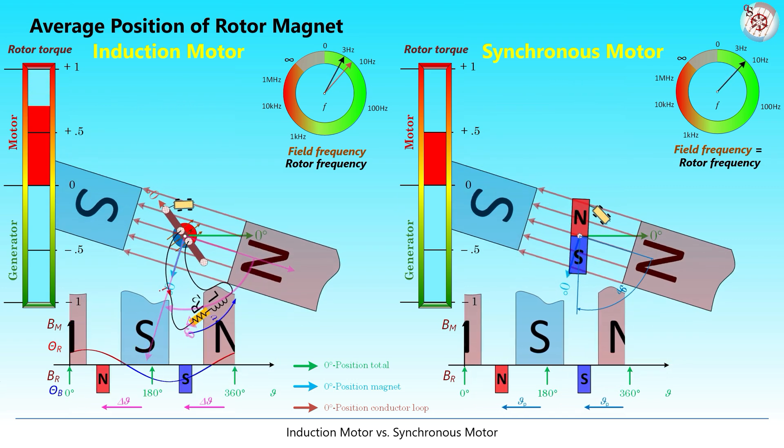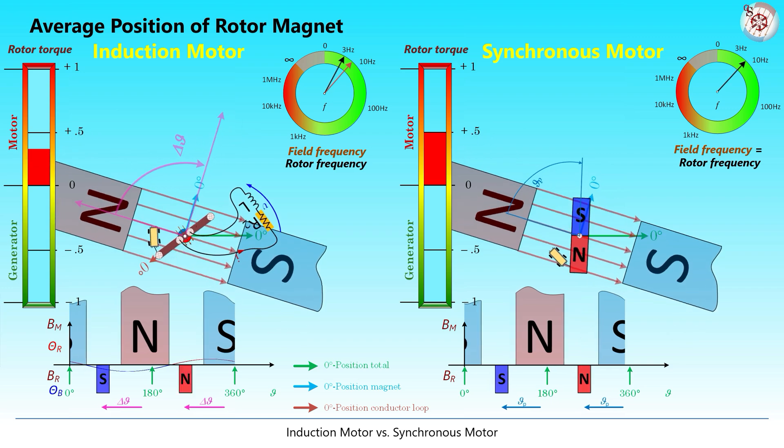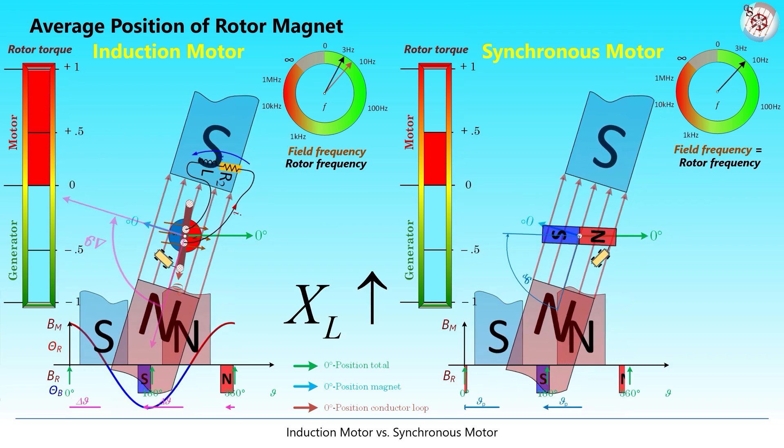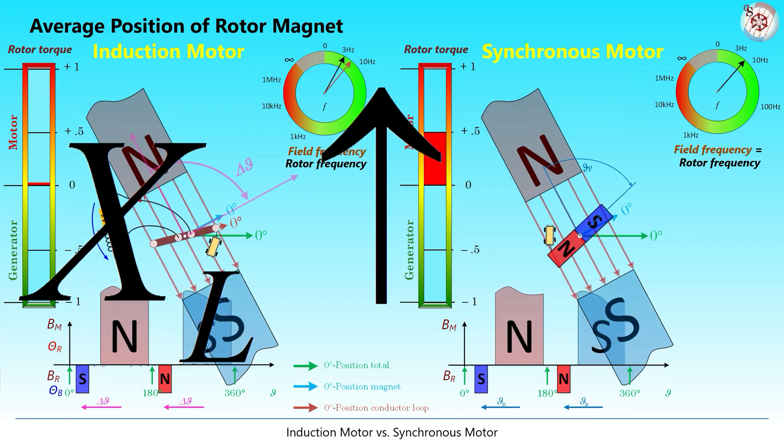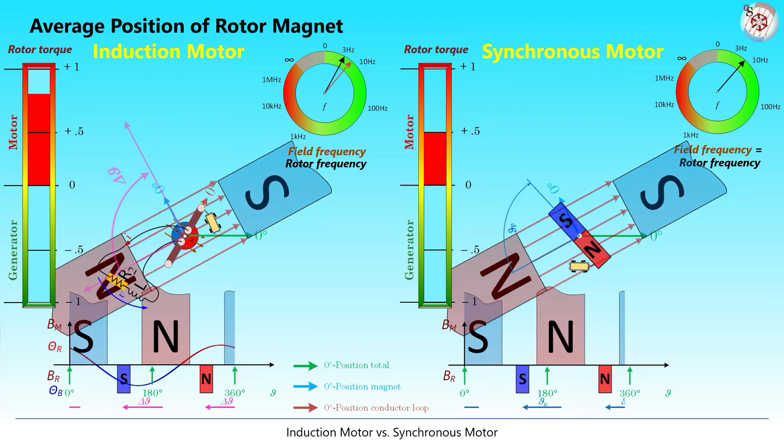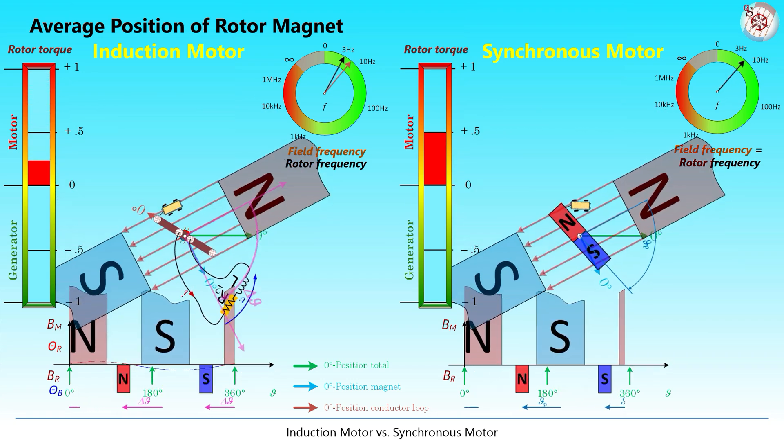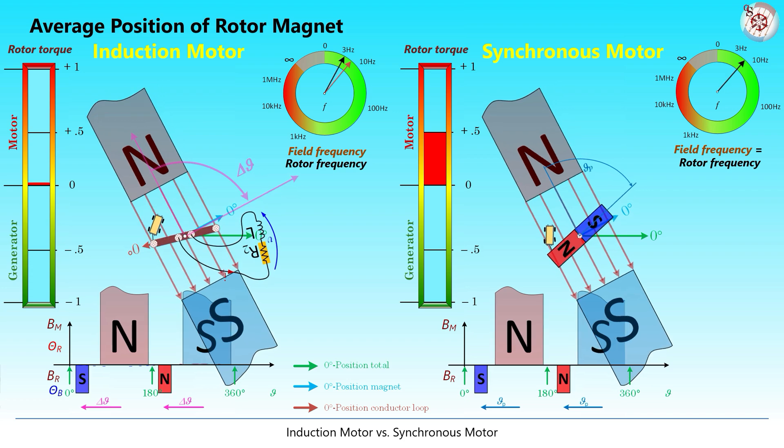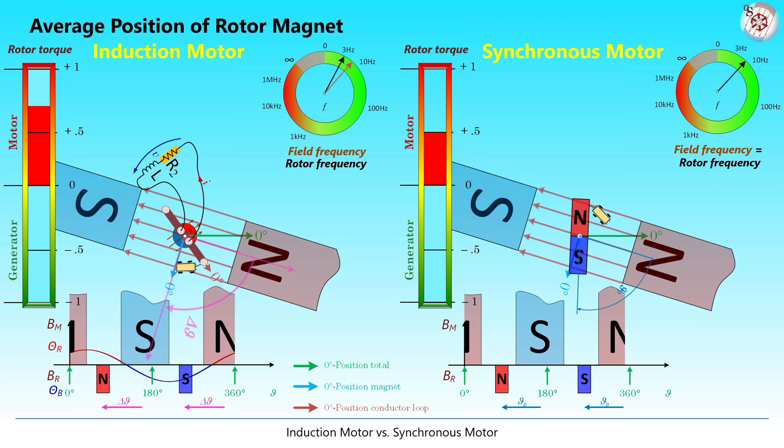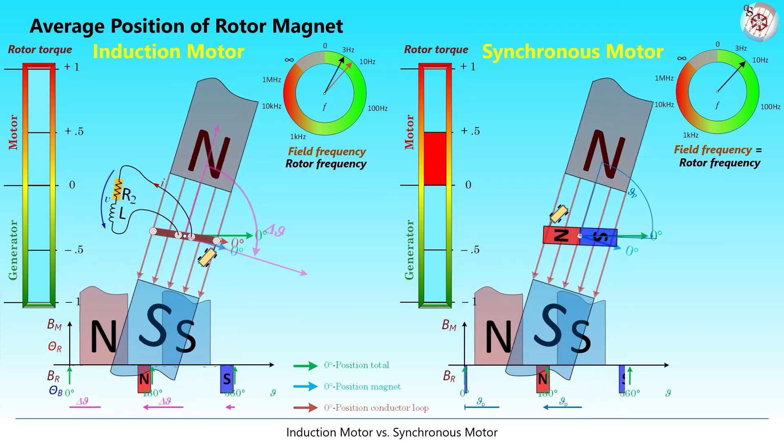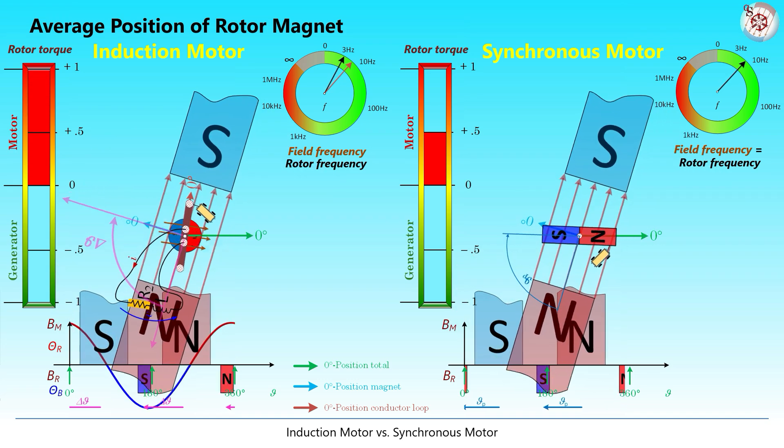However, if the frequency of the induced voltage increases because of increased slip, the inductive reactance XL grows thus pushing the phase angle between current and voltage back. Consequently, the effectiveness of torque creation decreases because of an increasingly bad timing of the current peaks which are rotor magnet peaks as well. These peaks appear no longer for a perpendicular position of the loop with regard to the rotating outer field.